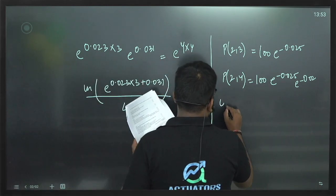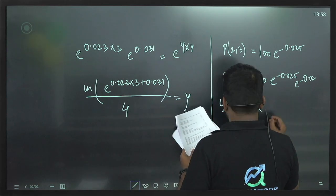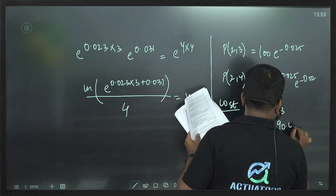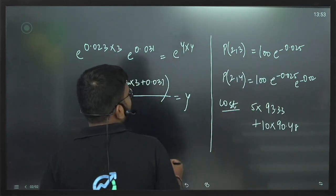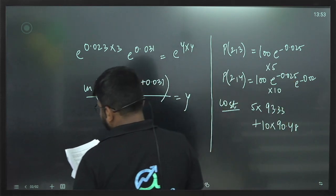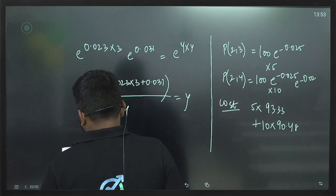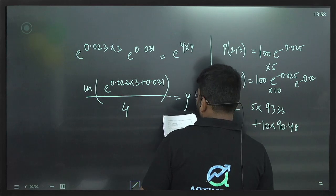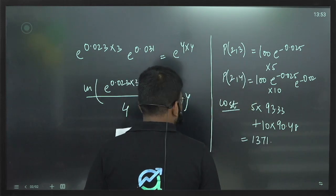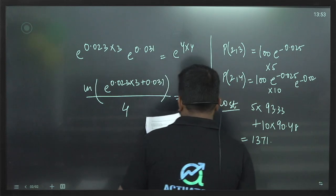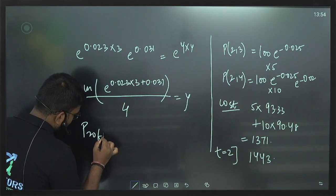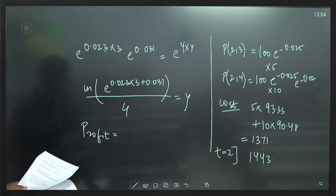We can calculate: Cost = 5 × 93.33 plus 10 × 90.48. At time 2, value = (P23 × 5) + (P24 × 10). Solving this: cost at time 0 comes to approximately 1371-something, and at time 2 it comes to approximately 1443-something. So the investor makes a profit of approximately 72-something.